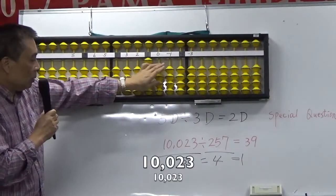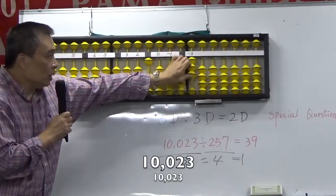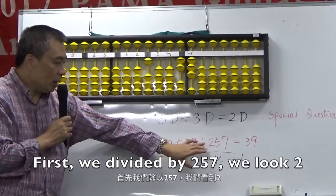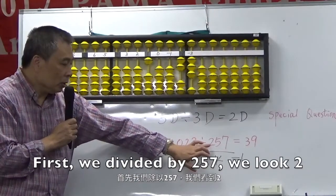1, 0, 0, 2, 3. First, answer, divide 2, 5, 7, we look to.